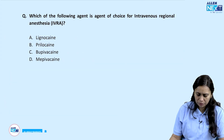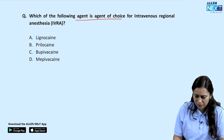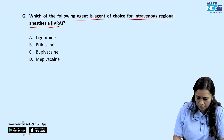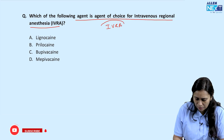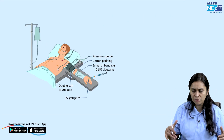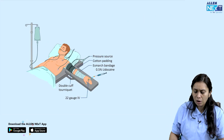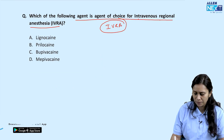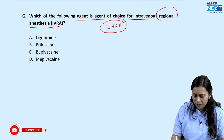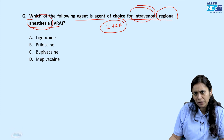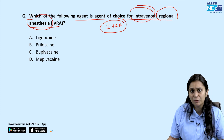Next question: which of the following agent is the agent of choice for intravenous anesthesia — IVRA? IVRA is practiced in the upper or lower extremities. The full form of IVRA is Intravenous Regional Anesthesia. Regional and intravenous seem contradictory — how do we give regional anesthesia by an IV route?